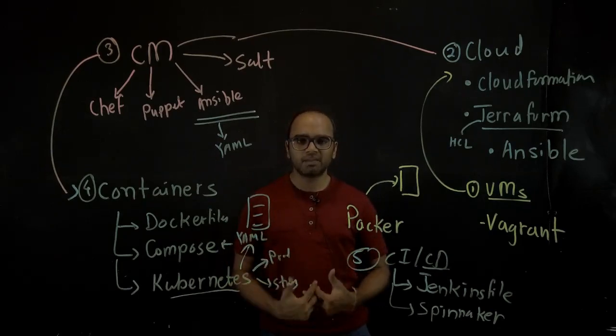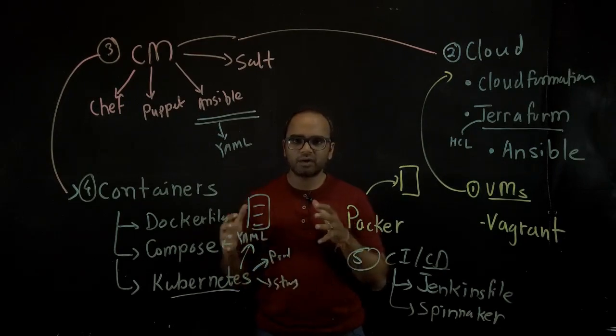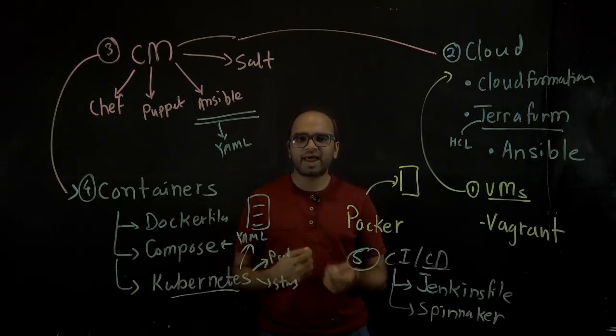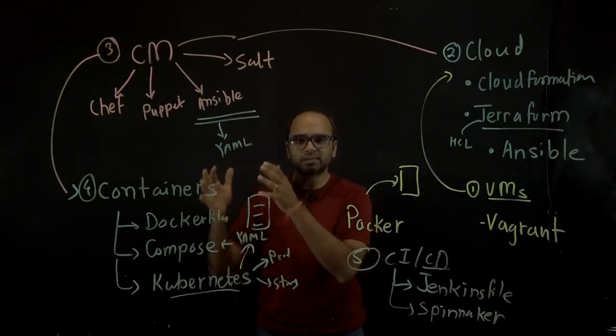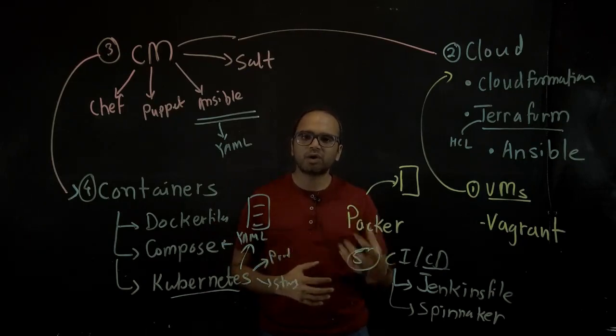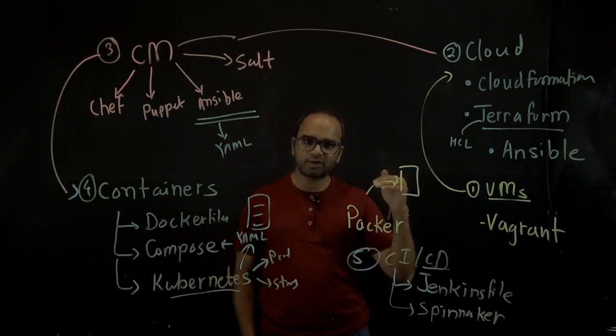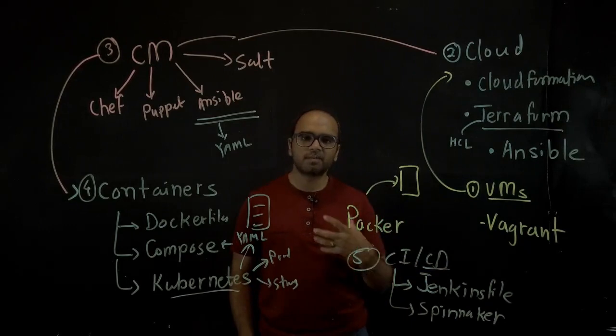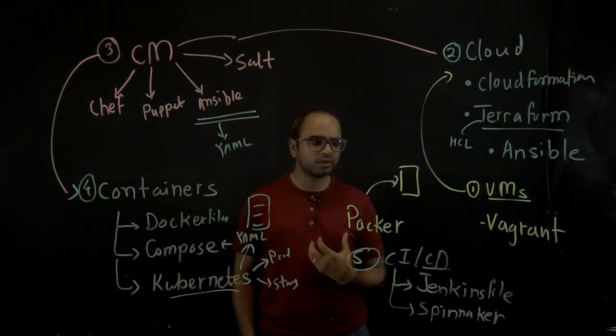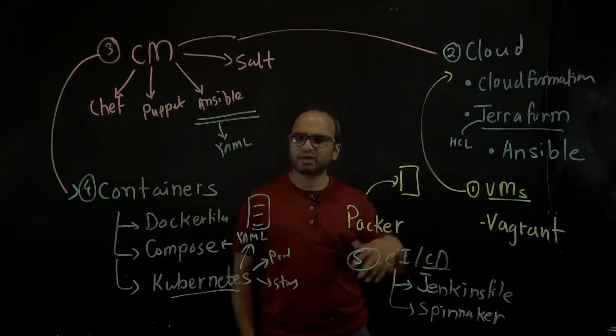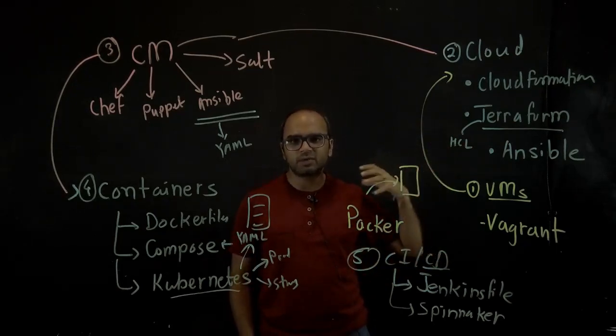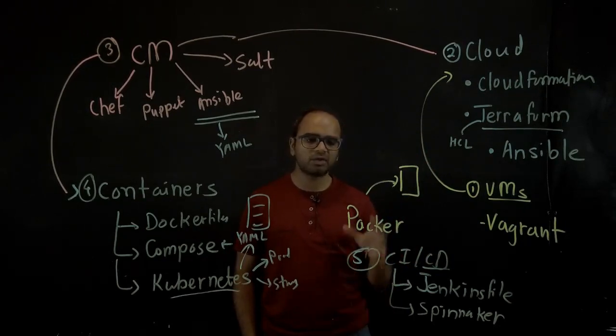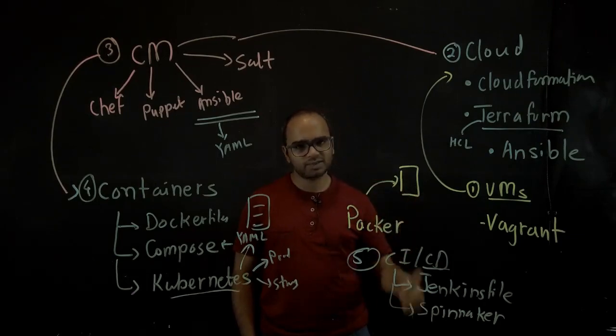And the good thing about these is you can define or write your infrastructure as code using a very simple declarative language. So the theme here is rather than you writing the procedure, the how part, you start writing what you want using a simpler abstracted language. So you write a simple language and that gets converted into actual scripts and code and that's what these tools bring to the table. And once you write it as code, you can then revision control it and get all the other benefits that you can by defining it as code and revision controlling it. And that's about the five categories of infrastructure as code.